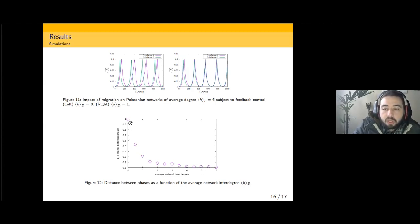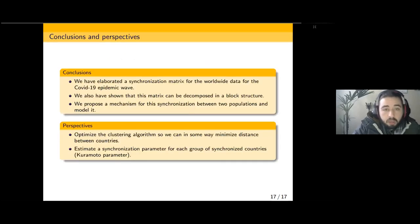That area in purple that we were discussing would be much bigger on the left panel than on the right panel. This is expressed in Figure 12, where we can see that the higher the average network inter-degree, the lower the distance between phases—the measure that we proposed for the synchronization matrix. Our model seems to bring to the table the mechanism behind the synchronization between two somehow connected populations, be it via migration, proximity, air flow, etc.